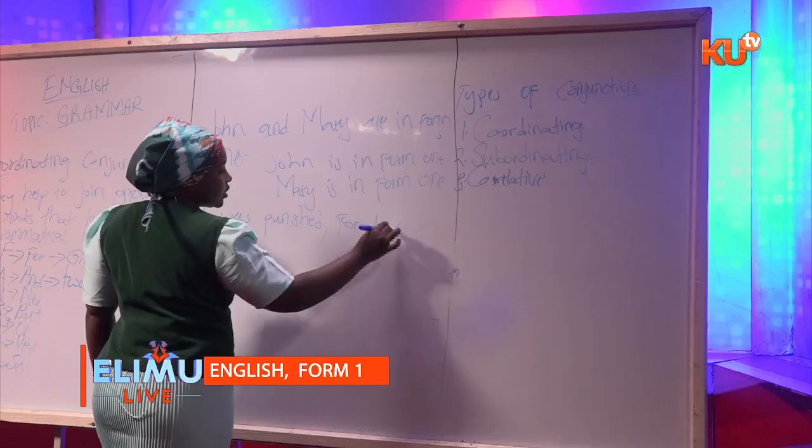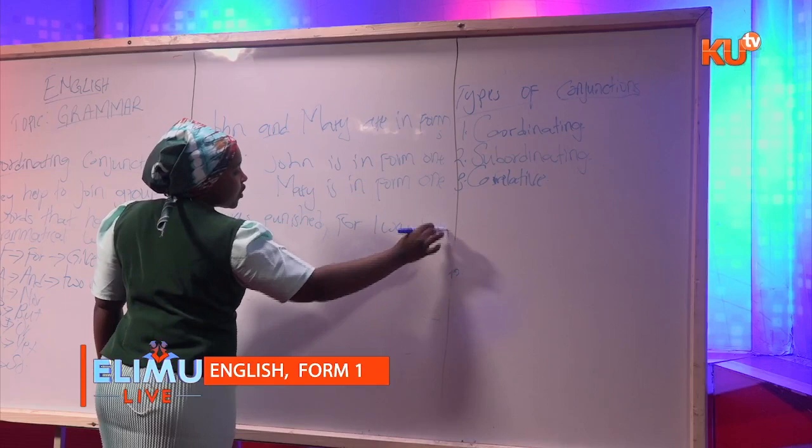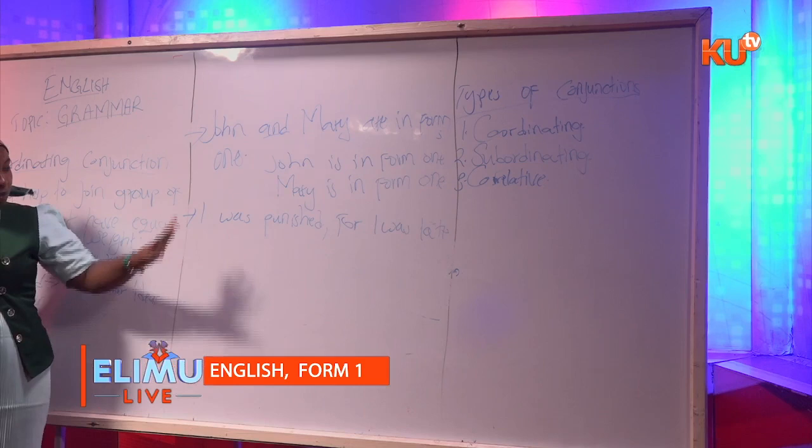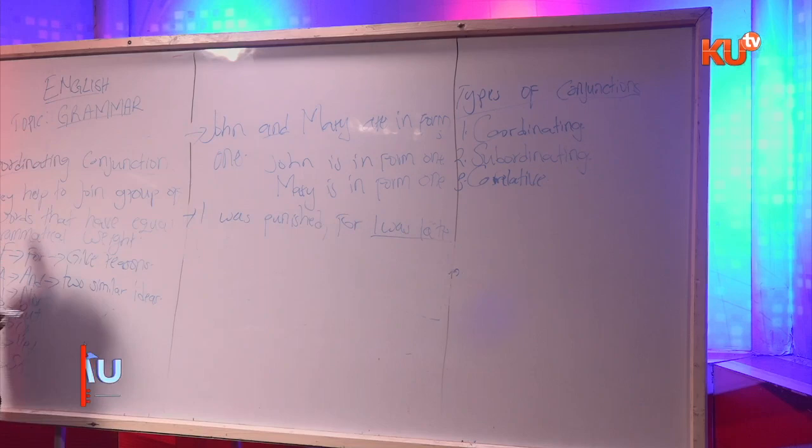In the sentence 'I was punished for I was late,' maybe there is a student who went to school late and the teacher decided to punish them. We are giving the reason why this person was punished — because the person was late. So 'for' is a coordinating conjunction used to give reason.